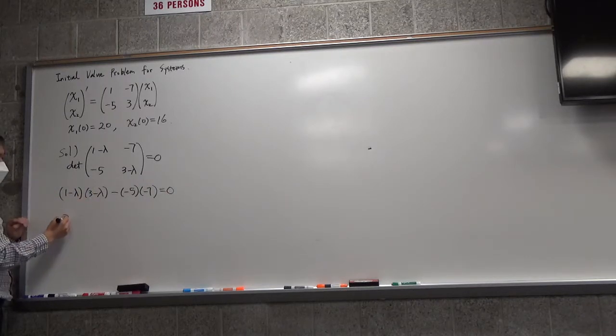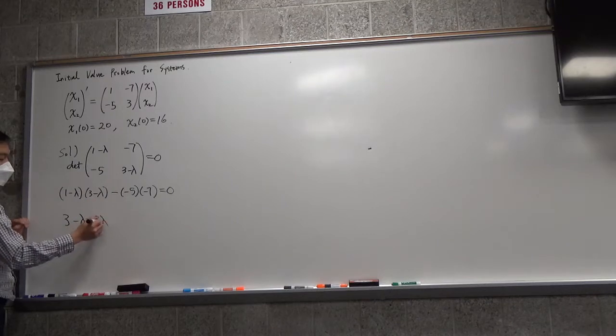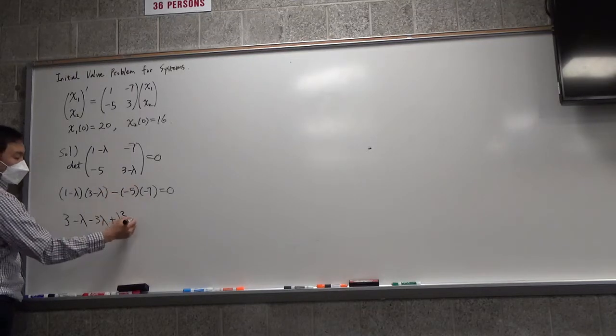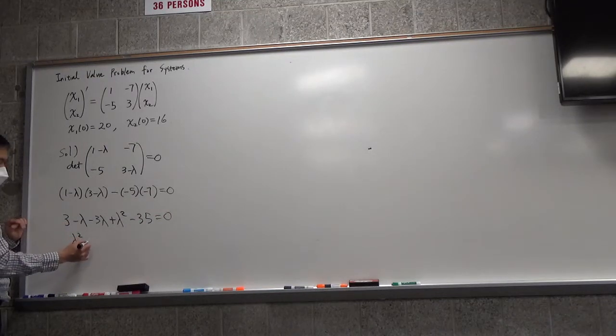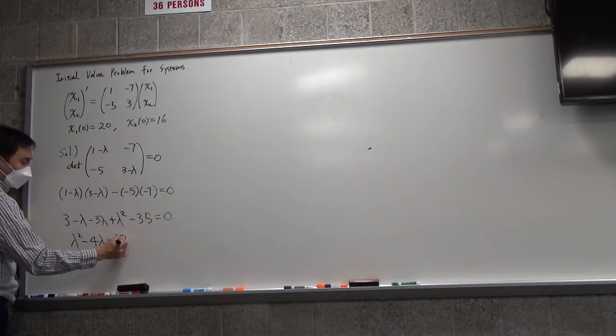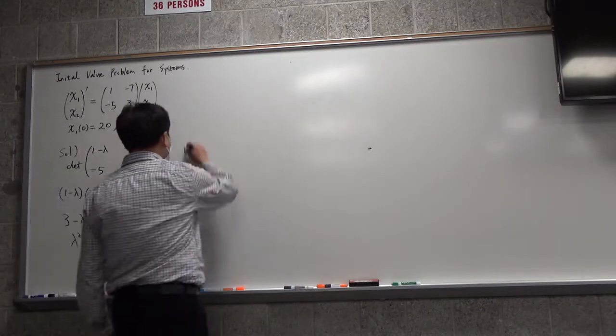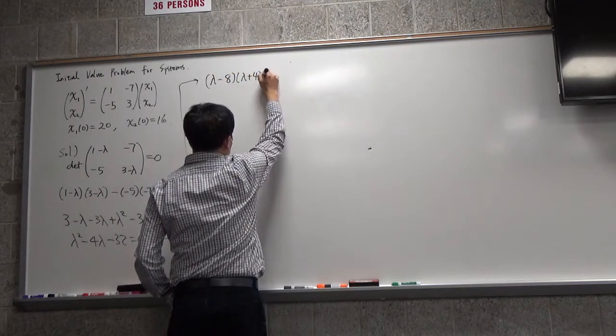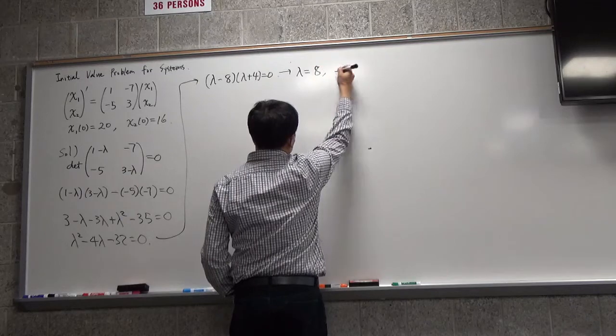And then you have to foil this out. So 1 times 3 gives you 3, 1 times negative lambda gives you negative lambda, negative lambda times 3 gives you negative 3 lambda, negative lambda times negative lambda gives you positive lambda squared, 5 times 7 is 35 with a minus. If you organize this nicely, you're going to get lambda squared minus 4 lambda minus 32 equals 0. This can be factored as lambda minus 8, lambda plus 4, giving you the two eigenvalues 8 and negative 4.